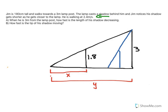We know that things are moving, so it's likely a calculus derivatives question involving related rates. Jim's 180 centimeters tall, walks towards a 3 meter tall lamppost, the lamp casts a shadow behind him, and Jim notices his shadow gets shorter as he gets closer to the lamp.